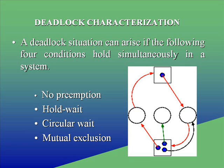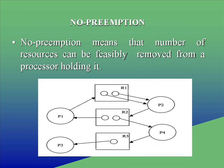A deadlock situation can arise if the following four conditions hold simultaneously in a system: No Preemption, Hold and Wait, Circular Wait, Mutual Exclusion.